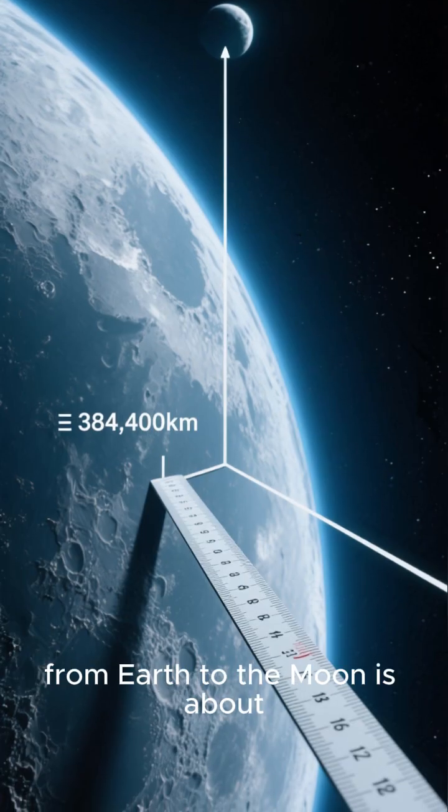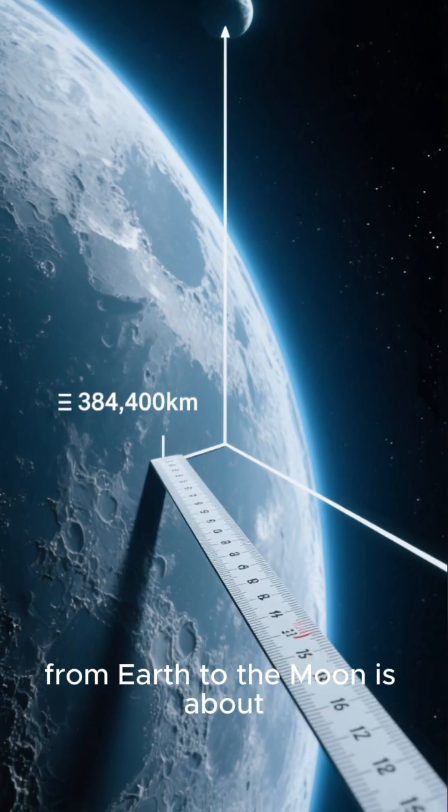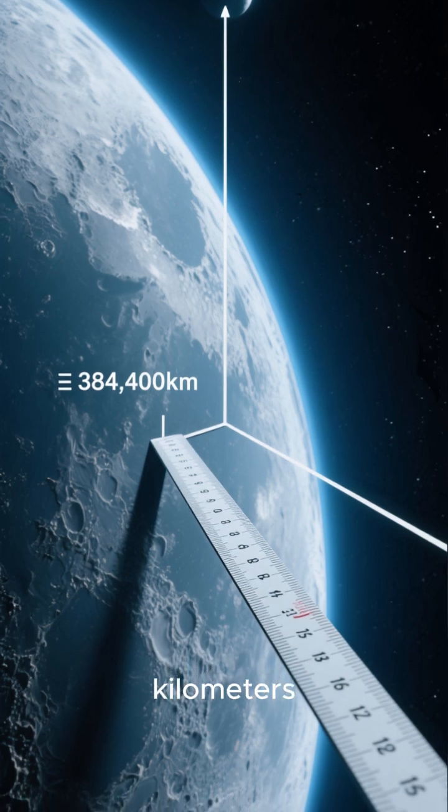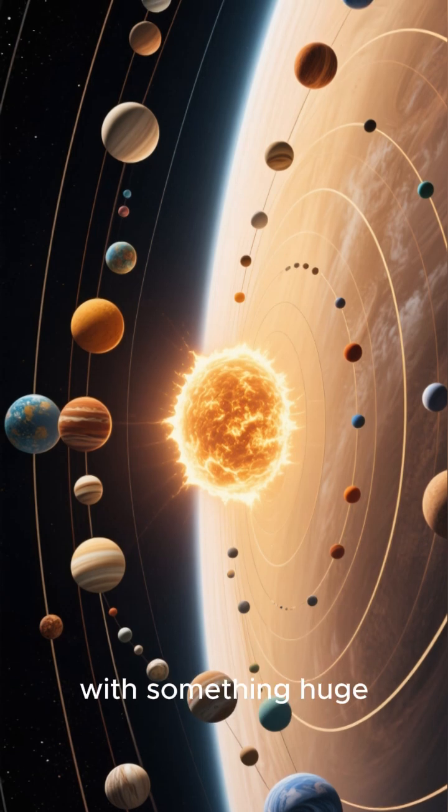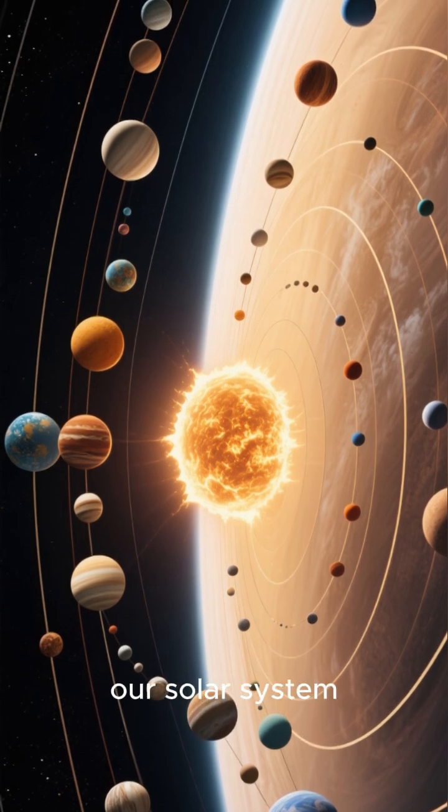The average distance from Earth to the moon is about 384,400 kilometers. That number might not mean much on its own. So let's put it into perspective with something huge. Our solar system.